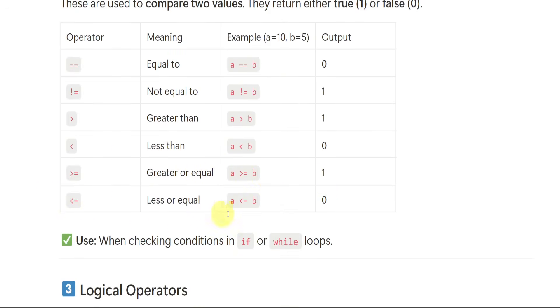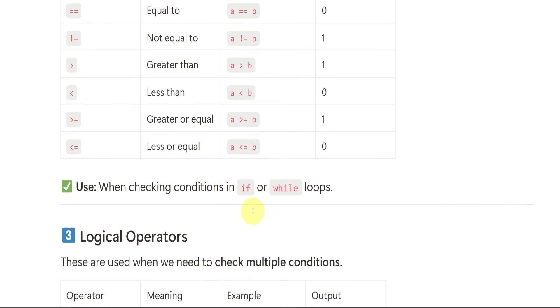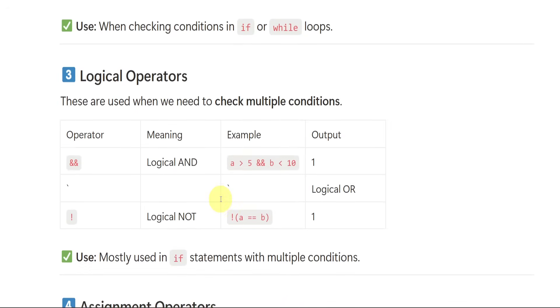Less than or equals to gives false. We check these conditions in if or while loops.